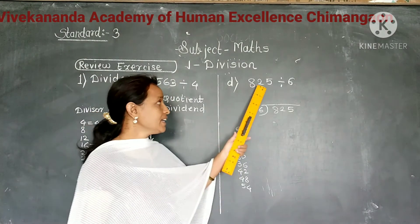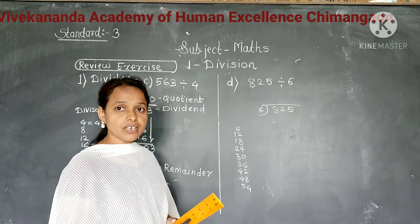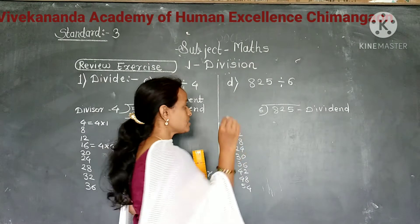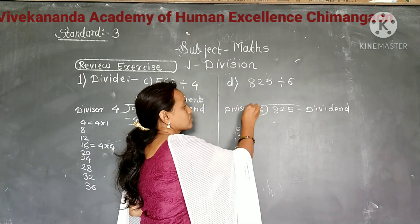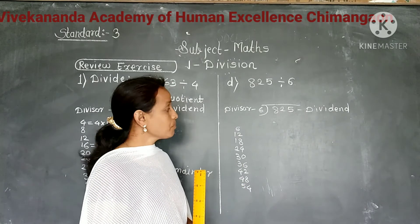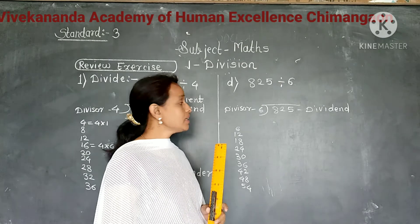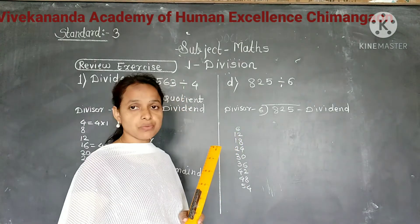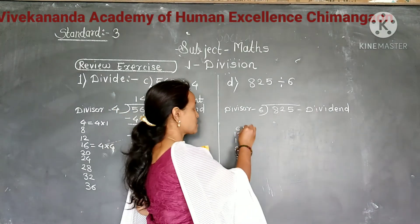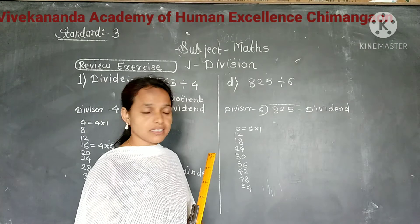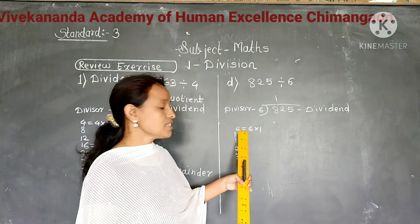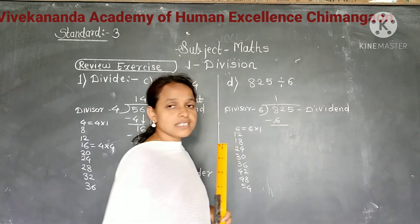Next example: divide 825 by 6. Here 825 is the dividend and 6 is the divisor. We write the dividend and divisor in the correct places and write the multiplication table of 6. Now we start division from the hundreds place. The digit in the hundreds place is 8. But 8 is not in the multiplication table of 6. So less than 8 is 6, which comes in the first place of the multiplication table of 6. So we divide 8 by 6, it gives 1 as a quotient. Write 1 as a quotient in the hundreds place, and write product 6 below 8. Subtract, gives 2.